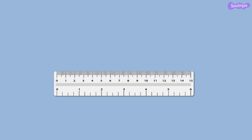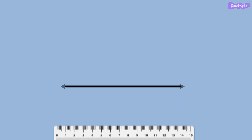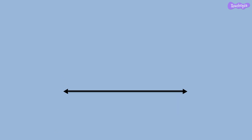Draw any line using a scale on a sheet of paper as shown. Mark a point on the line which forms the vertex of the 30 degree angle to be created. Take a compass and place its needle pointer at point A.